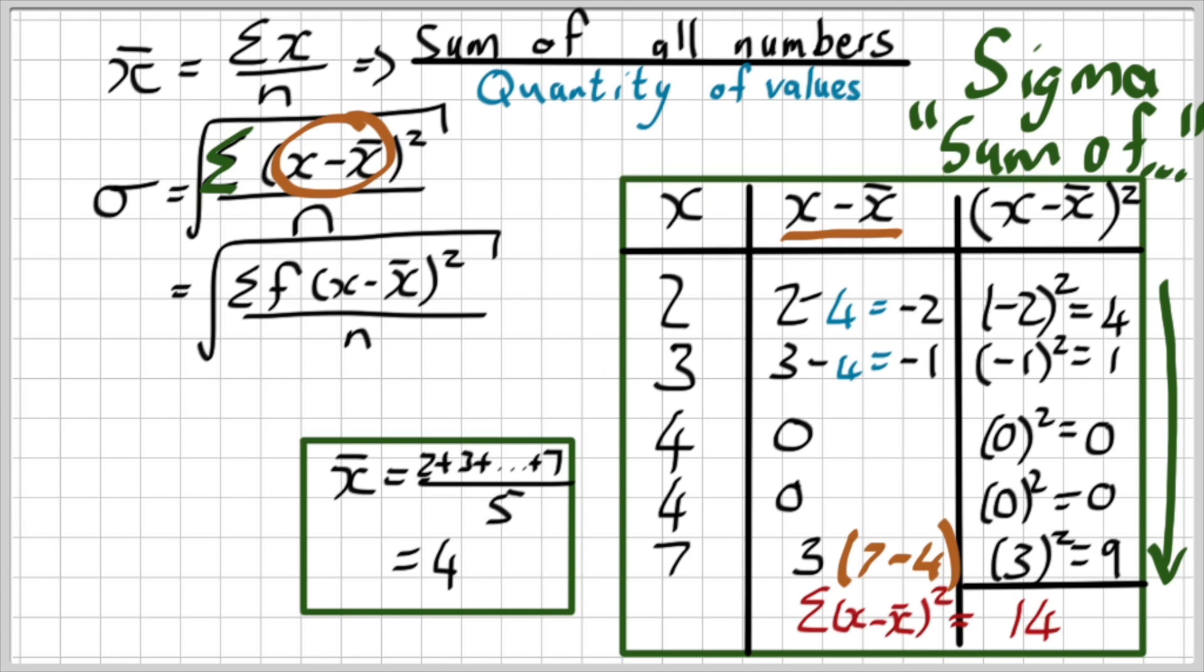And all I need to do is go to my formula and plug it in the right place—that is specifically the numerator, the 14. What is the n? Well, there are five numbers, so it's actually then the sigma is the root of 2.8, which is 1.67 approximately.